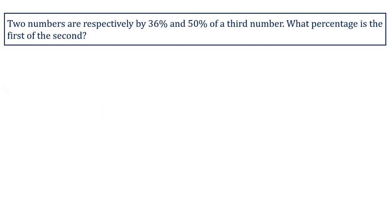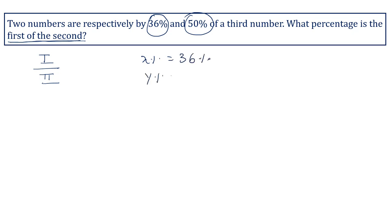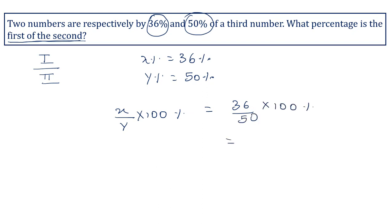Two numbers are respectively 36 percent and 50 percent of a third number. What percentage is the first of the second? We have to compare first with the second, so put first in the numerator and second in the denominator. x percent equals 36 percent and y percent equals 50 percent. Using the formula x upon y into 100 percent: 36 upon 50 into 100 percent, cancelling the zeros gives 72 percent. So 72 percent is the first of the second.